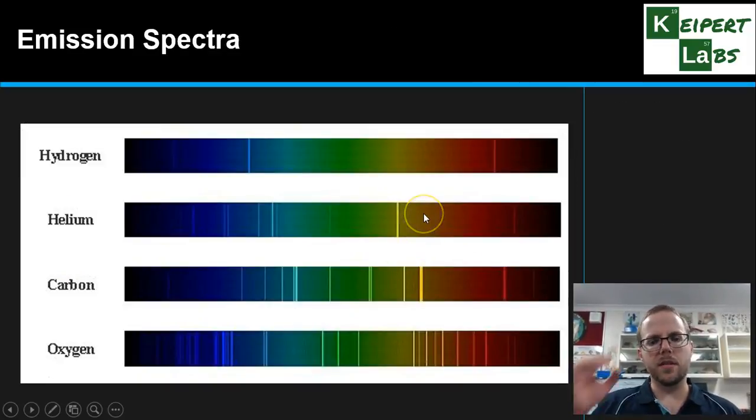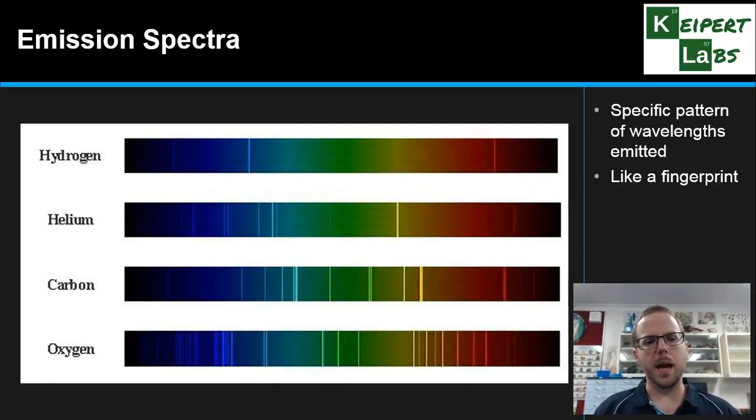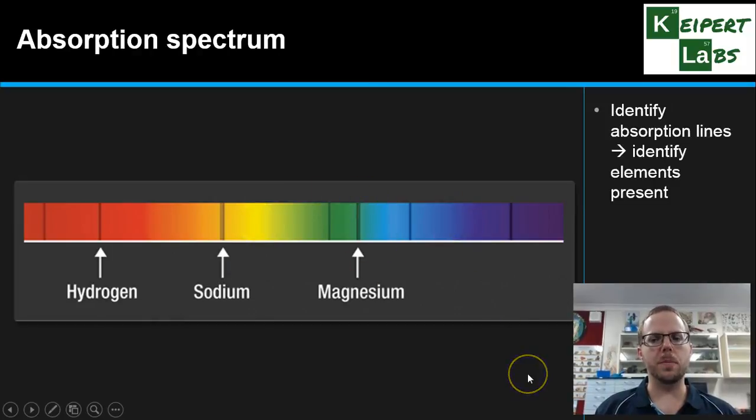You can see some examples here looking at emission spectra. We've got hydrogen, helium, carbon and oxygen all emit very specific but different wavelengths of light. So that specific pattern is essentially like a fingerprint we can use to identify that that element is there. We see a similar idea in an absorption spectrum, so those different absences in that absorption spectrum correspond to identifying different elements that are there.